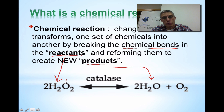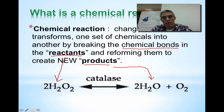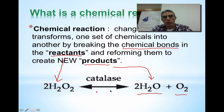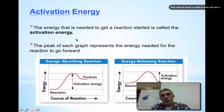We're going to take these parts and rearrange them to create brand new products, which are always going to be on the right-hand side. When this reaction proceeds from left to right, it's going to be encouraged by the enzyme catalase, and what we end up getting is a rearrangement which produces two molecules of H2O, which is just water, and one molecule of O2, which is simply oxygen. This is a good example of a chemical reaction.